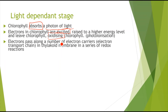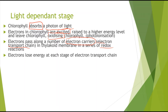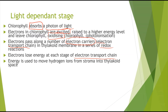The electrons pass along a number of electron carriers — the electron transport chain — located inside the thylakoid membrane, in a series of redox reactions. Each carrier is reduced as electrons arrive and oxidised as they leave. The electrons lose energy at each stage; when released from the chlorophyll they have very high energy, but lose it as they move along. This energy is used to move hydrogen ions from the stroma into the thylakoid space.